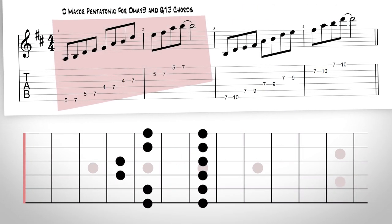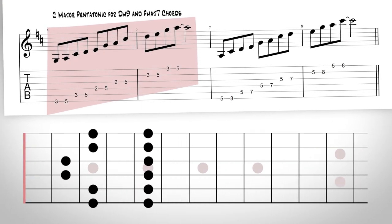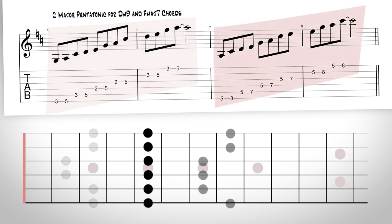You can think of this as a little trick to get upper chord extensions into your playing without having to think too much. Here are the ones Tony uses: a D major pentatonic for D major 9 and G13, the C major pentatonic for the D minor 9 chord and the F major 7 like we discussed, and lastly an E major pentatonic that Tony uses over C sharp minor 7, F sharp 7, E9, and D major 9.